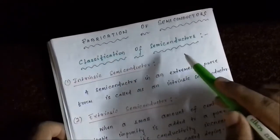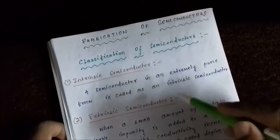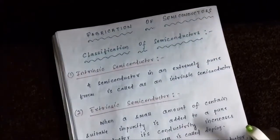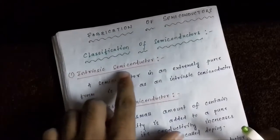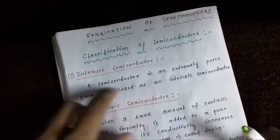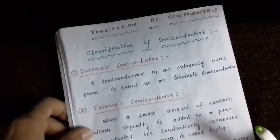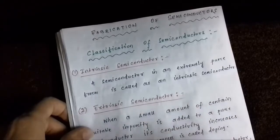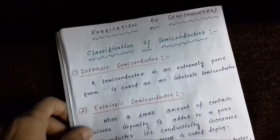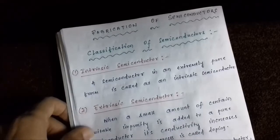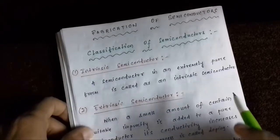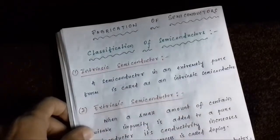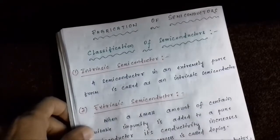The property we have used here is their purity — the purity level of the semiconductors. First, we have the intrinsic semiconductor. What is an intrinsic semiconductor? An intrinsic semiconductor is one which is in an extremely pure form. A semiconductor in its absolute pure state is called an intrinsic semiconductor. It has no impurity added to it; it is extremely pure.